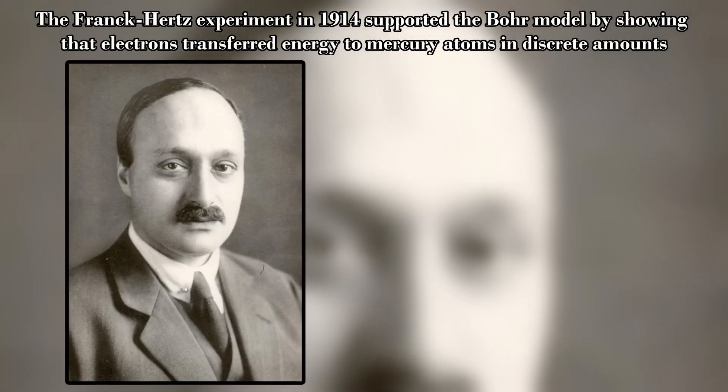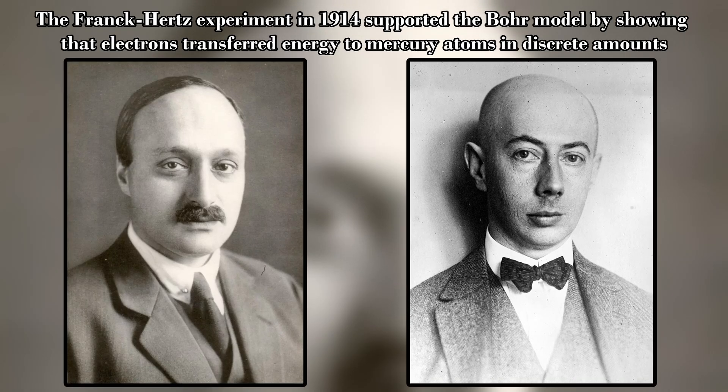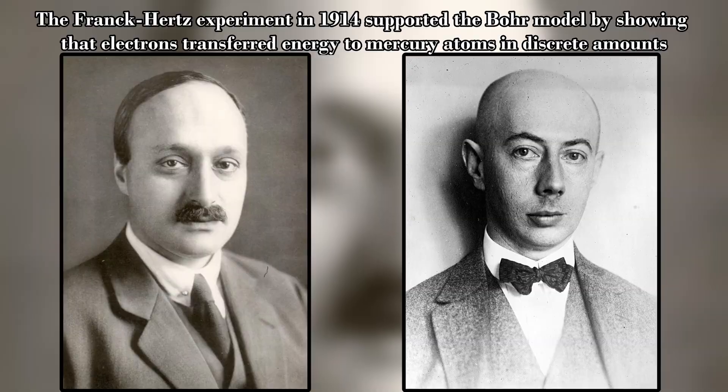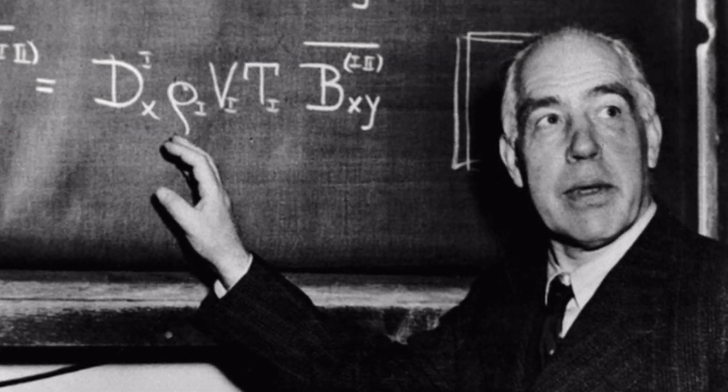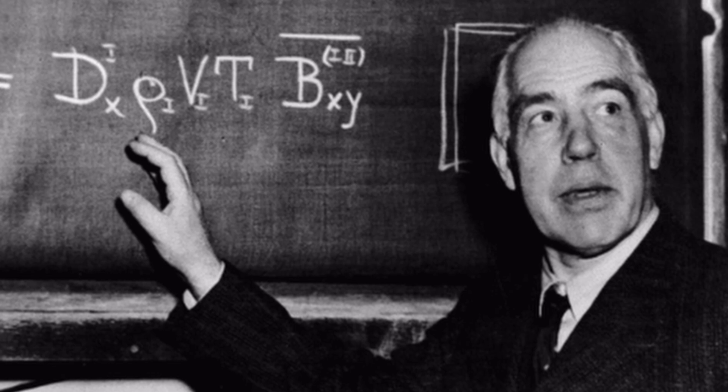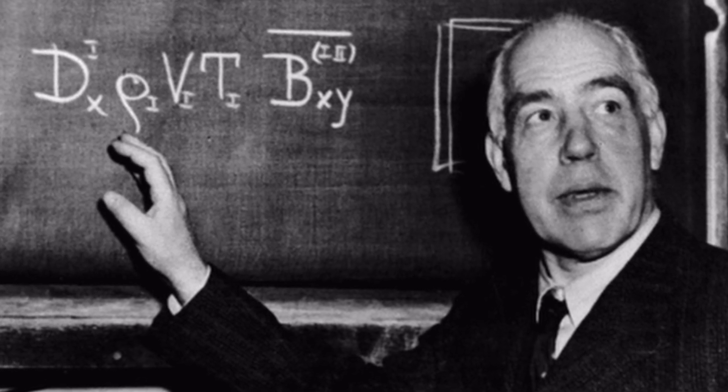Bohr's model was slowly accepted over time as experiments verified predictions that came from this model, most notably the Frank Hertz experiment. The Bohr model wasn't perfect, however, because for atoms with more than one electron, predictions of spectral lines became less and less accurate.